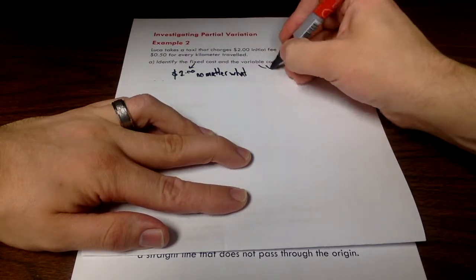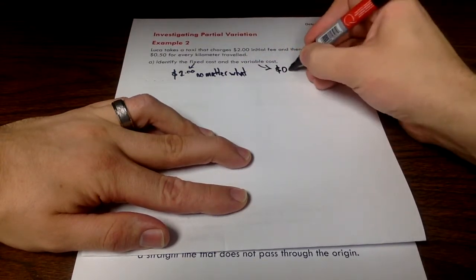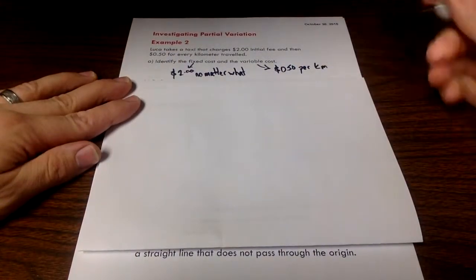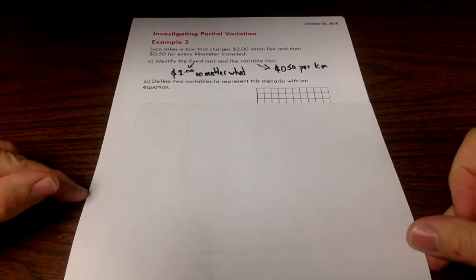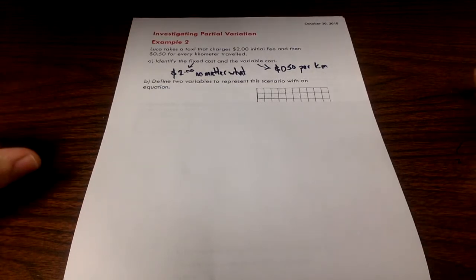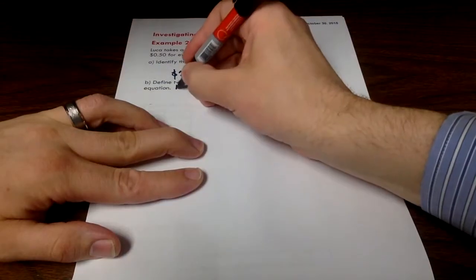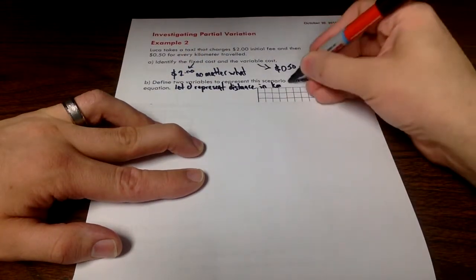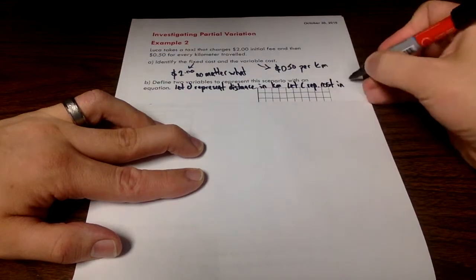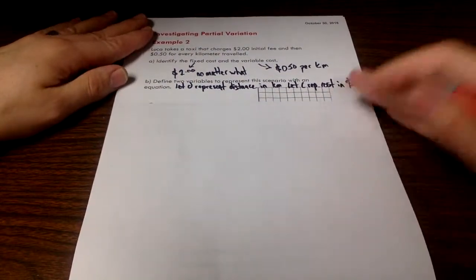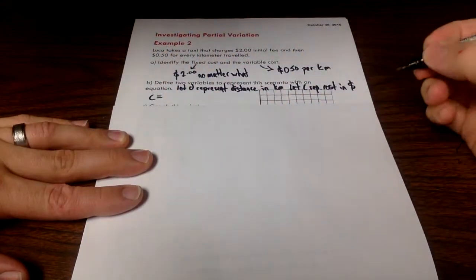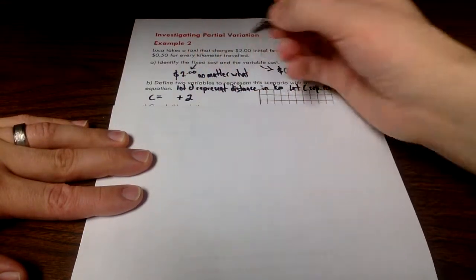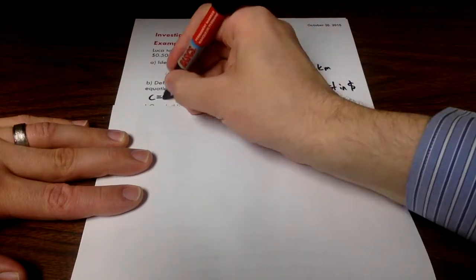That's what we call our fixed cost. Our variable cost, this is the 50 cents per kilometer that we're traveling. So that's what we call a variable cost. It varies depending on the number of kilometers we've driven. Just like the last example, we can define two variables and write an equation that will represent this scenario. I'm going to say let D represent distance traveled in kilometers, and let C represent the cost in dollars. I can come up with an equation. C equals, right away we know it's going to be $2, but that's only our fixed cost.